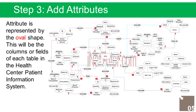The last part of the ERD process is to add attributes to our entities. The User entity has the following attributes: ID (Primary Key, represented with underline), Username, Password, Complete Name, Contact, Address, Designation, and Status.